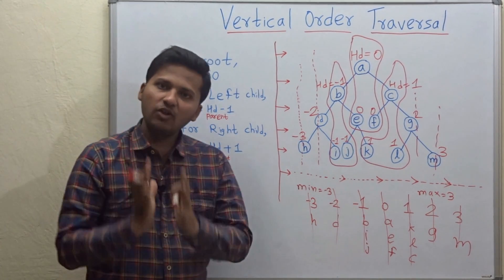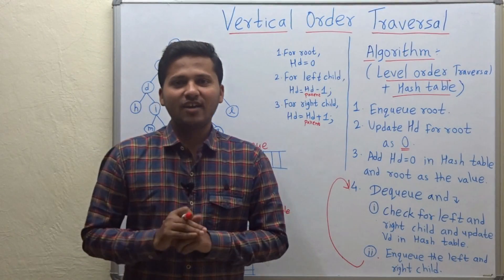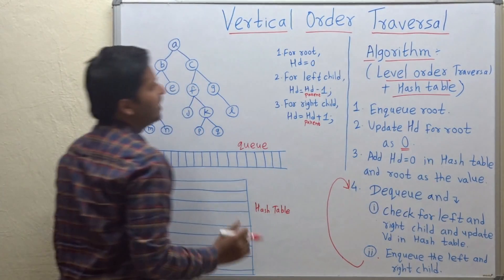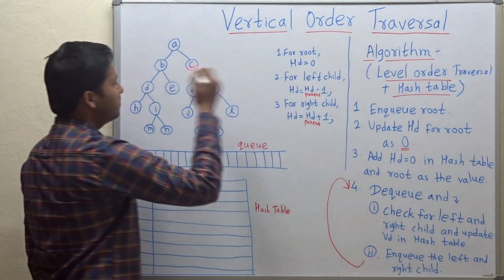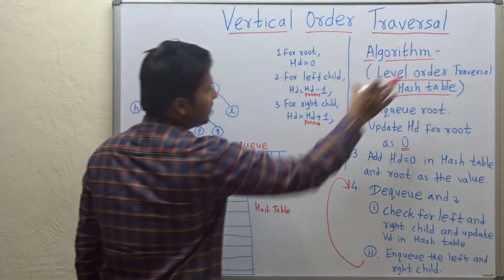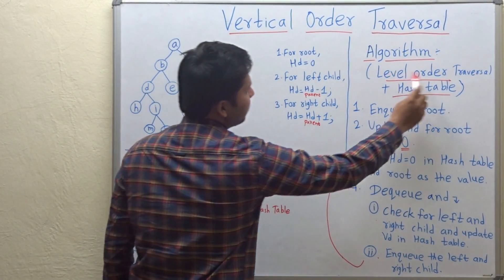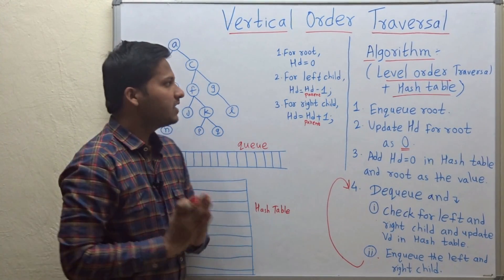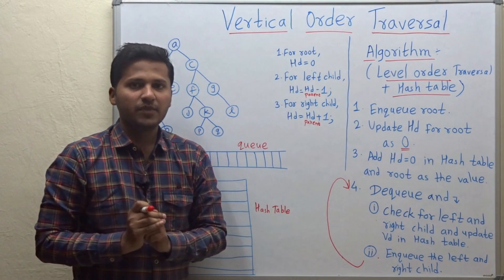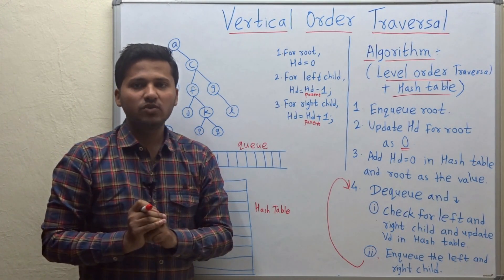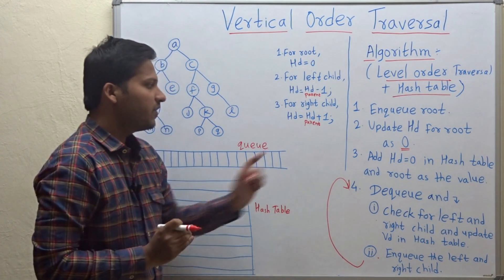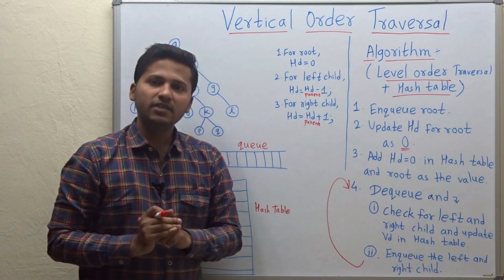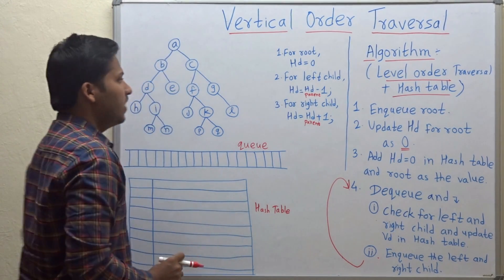Now we are going to see the algorithm for doing this. The algorithm is the combination of level order traversal plus a hash table. In my previous video, I have explained the level order traversal in detail. If you have not seen that video, prefer watching it so you can perfectly understand this algorithm. I have mentioned the algorithm link in the description below.